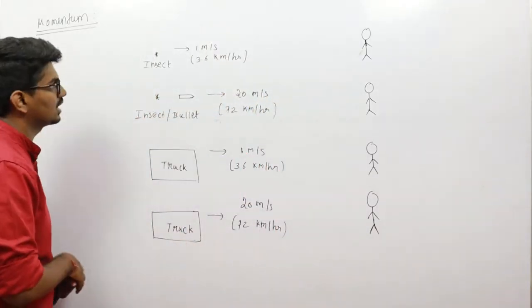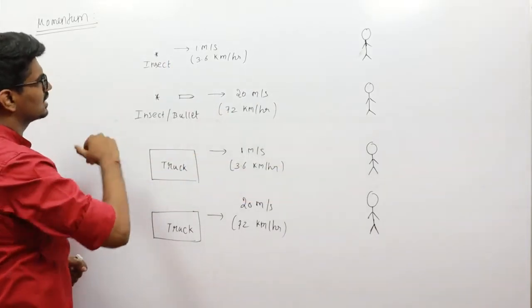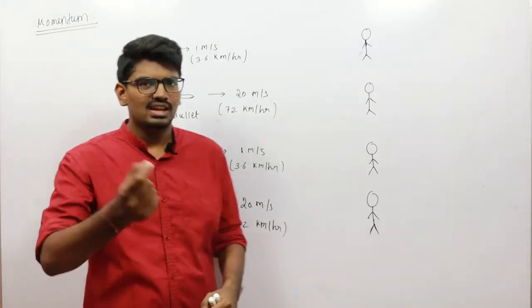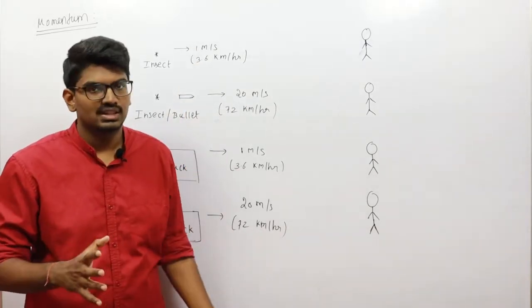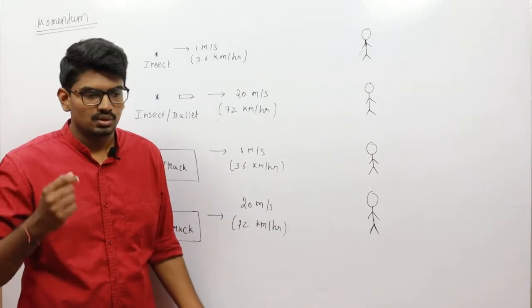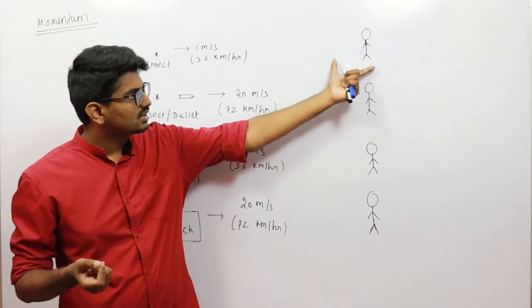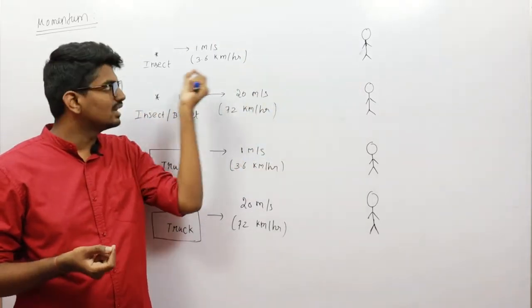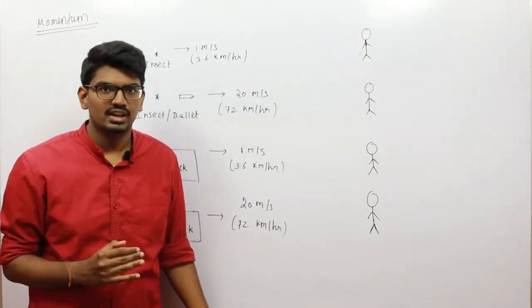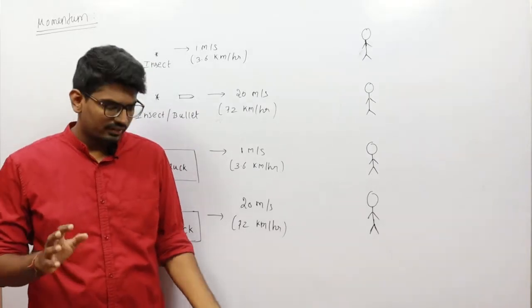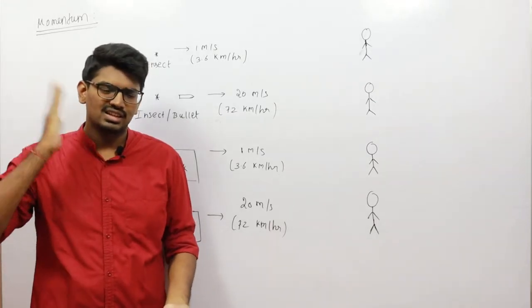Let's take an insect — consider a mosquito or any small insect — moving at a speed of 1 meter per second, approximately 3.6 kilometers per hour. Now consider a person standing in front of that insect. If the insect comes and hits that person, what will happen? The effect will be almost zero. He's not going to feel anything; the insect will just hit and he'll walk away.